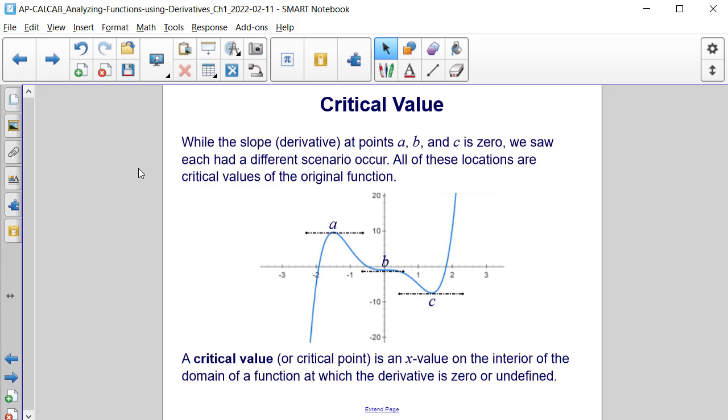While the slope or derivative at points a, b, and c is 0, we saw each had a different scenario occur.